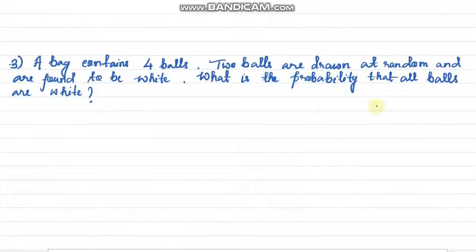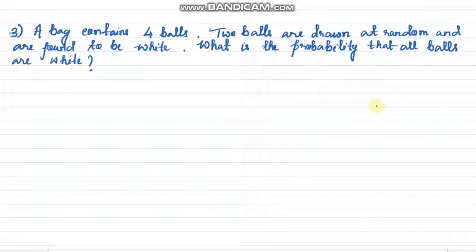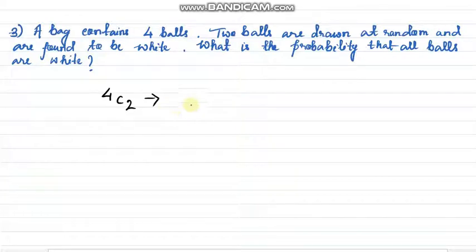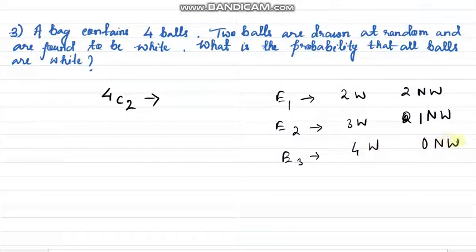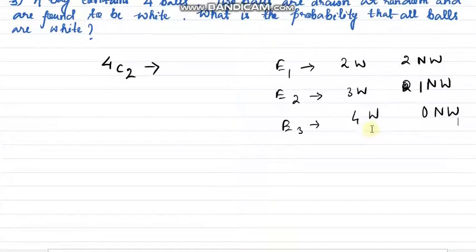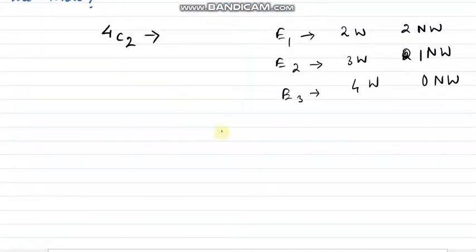Moving to the next sum: a bag contains 4 balls, 2 balls are drawn at random and found to be white. What is the probability that all balls are white? There are three possible cases: E1 — 2 white balls and 2 non-white balls; E2 — 3 white balls and 1 non-white ball; E3 — 4 white balls and 0 non-white balls. Since minimum 2 white balls must be present, these are our events. The probability of each of E1, E2, E3 is 1 by 3, as they are equally likely.